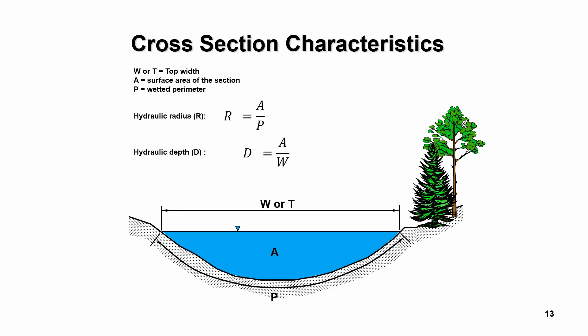To analyze these calculations, we need to describe parameters related to the cross-sectional area of a channel, whether man-made or natural. The hydraulic radius R is the cross-sectional area divided by the wetted perimeter — the distance along the wetted boundary of the stream. Similarly, hydraulic depth is defined as the area divided by the top width, sometimes denoted w or t in the literature.